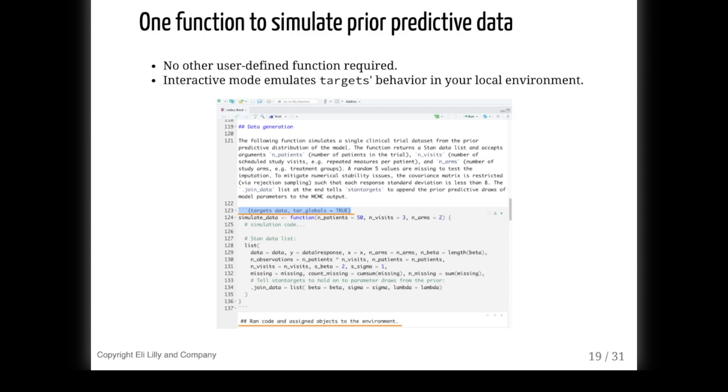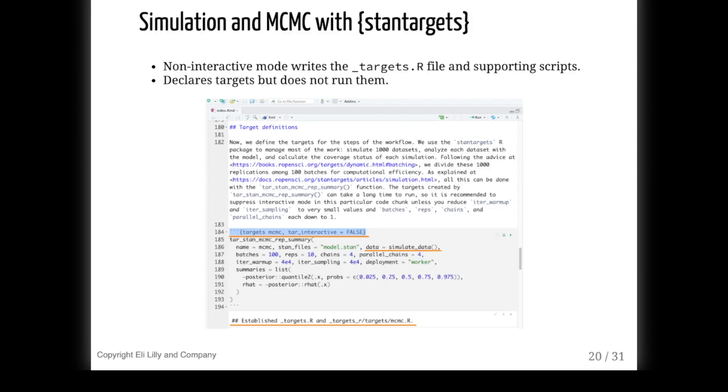Interactive mode for a target or list of targets is similar. Target markdown will resolve the directed acyclic graph, run the correct targets in the correct order out of the ones in the chunk, test that the targets can be stored and retrieved properly, and assign them to memory as variables in your R session. So interactive mode runs code in your environment and saves nothing to persistent storage. It's for testing and prototyping only, and the results go away when you restart your R session.